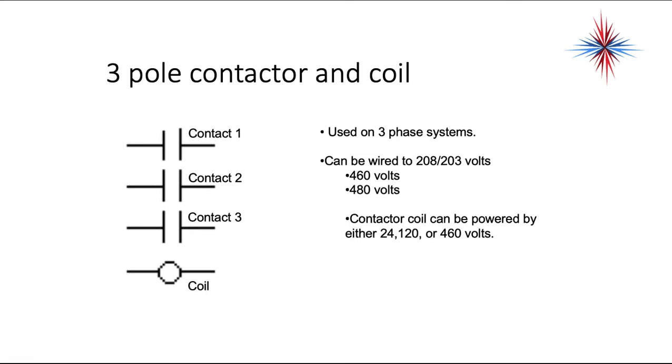Three pole contactors most often are used on three phase systems. You don't see that often on gas heating unless it's a big rooftop unit. They can be wired to 208, 460, 480. The contactor coils can be powered by 24, 120, or 460 volts. You'll always want to look at the stamp on the side of the coil on the side of the contactor and make sure you have the right voltage on the coil.